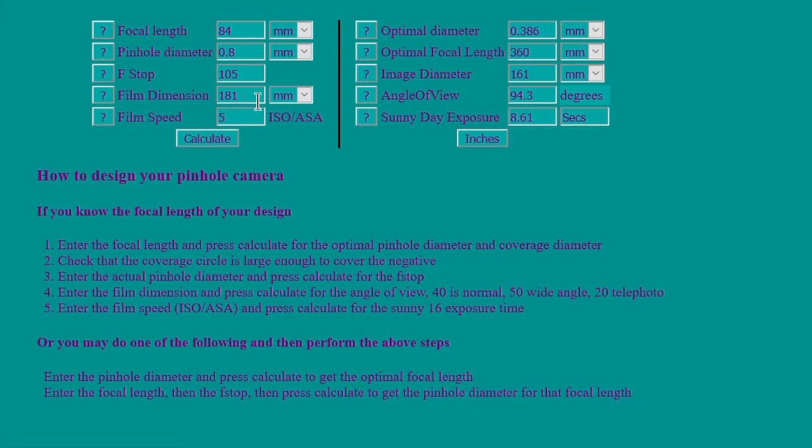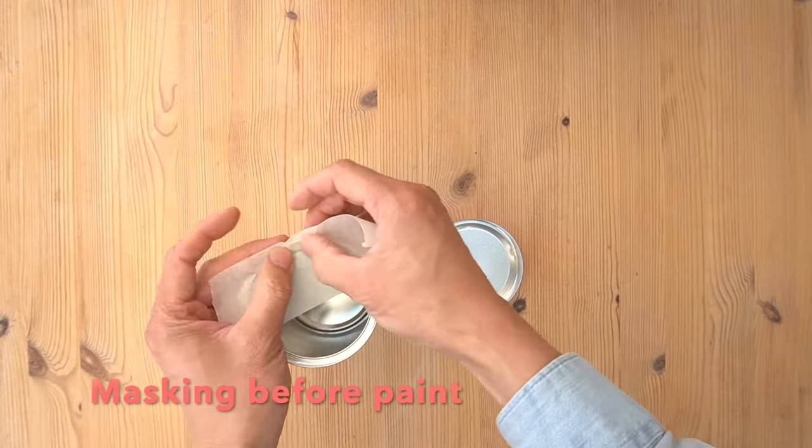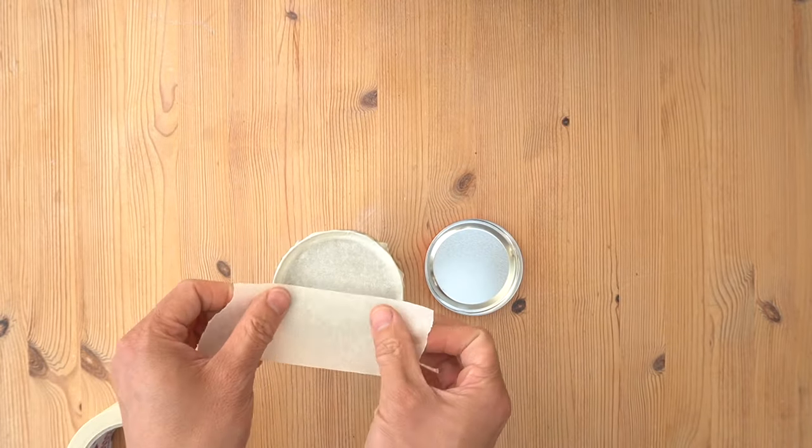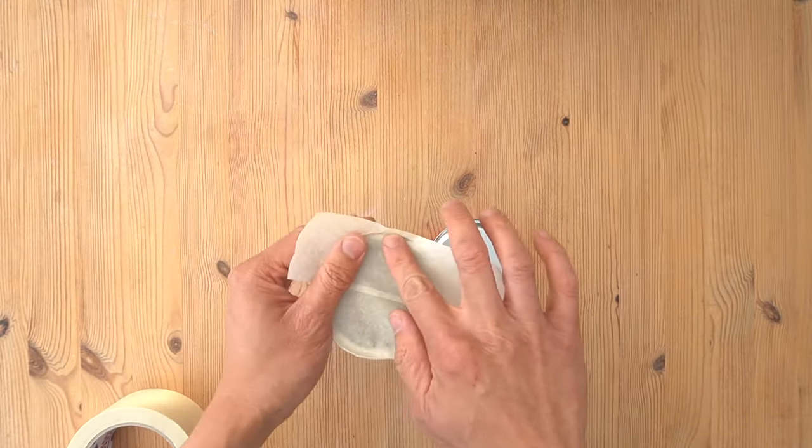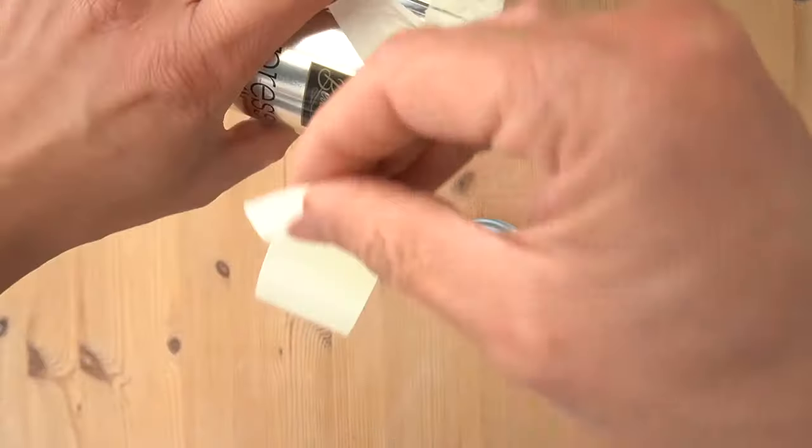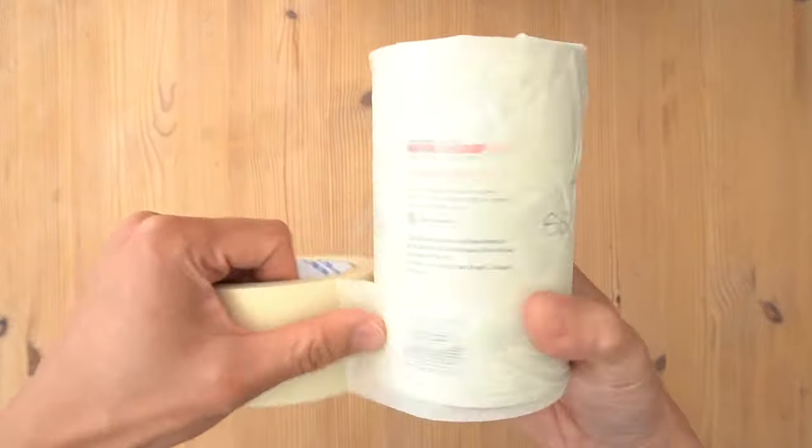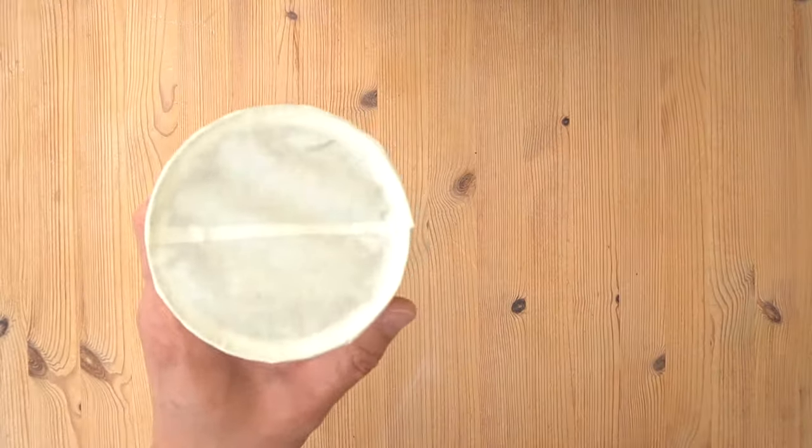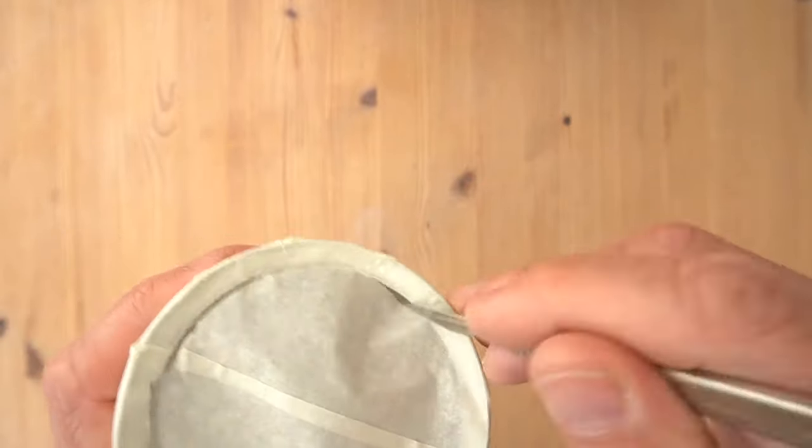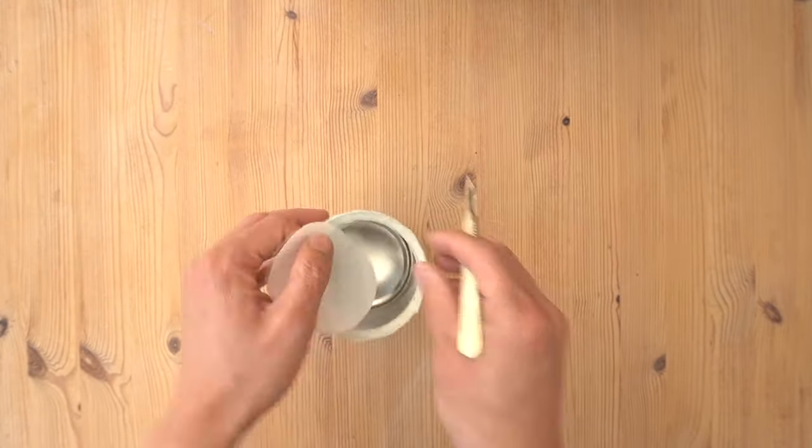Moving on, I started to mask the tin so that I could spray the inside black to avoid any reflections of light. I applied tape to the top, the sides, and made sure everything was intact, and then use the scalpel to cut open the hole so that the paint can only reach the inside areas.